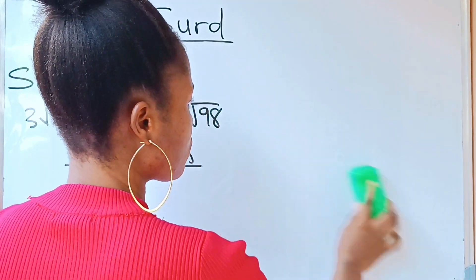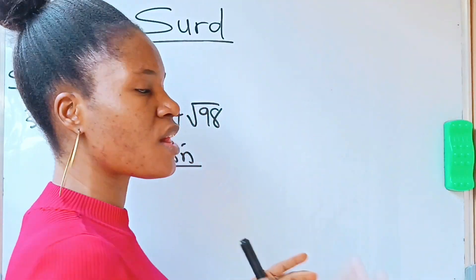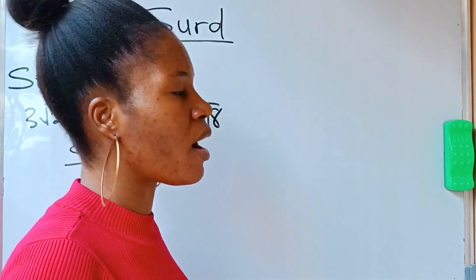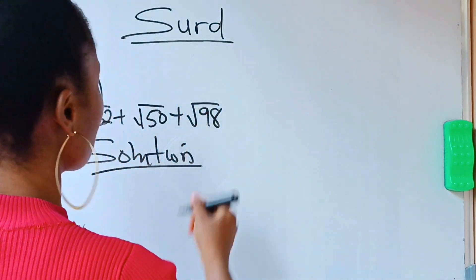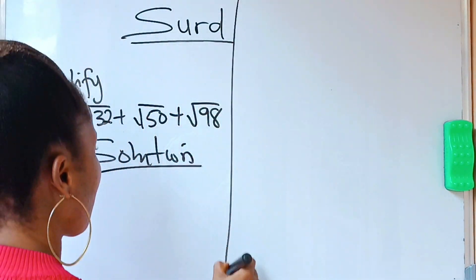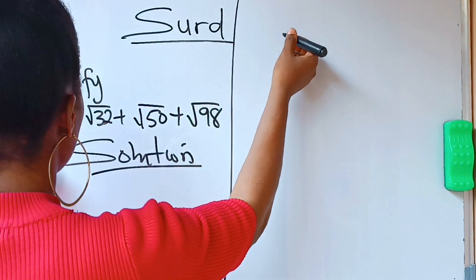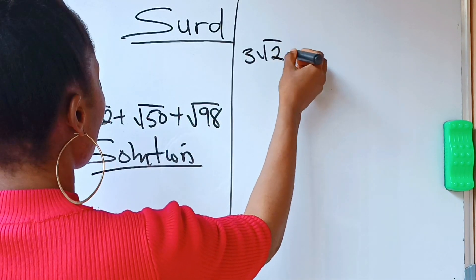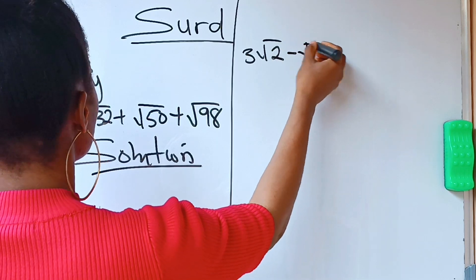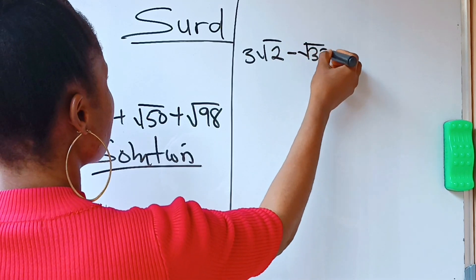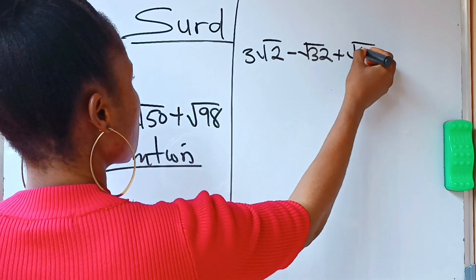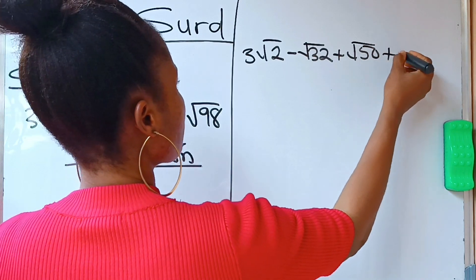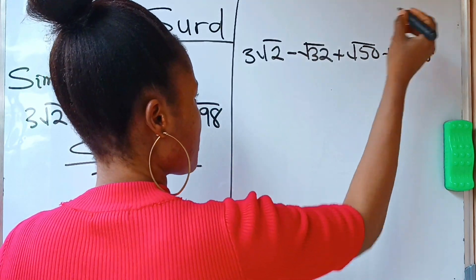When you are asked to simplify a surd, you are going to split it into a perfect square and an ordinary number. The equation says we should simplify 3√2 minus √32 plus √50 plus √98.